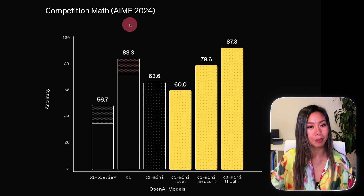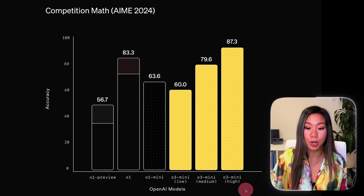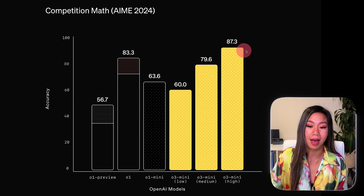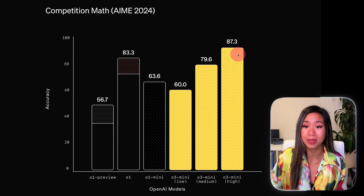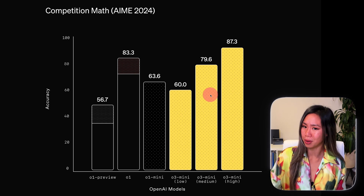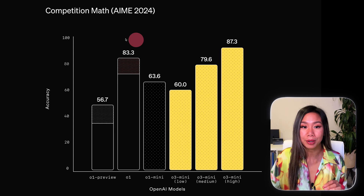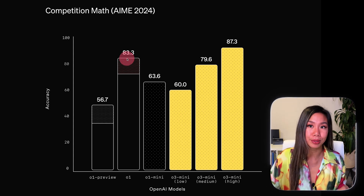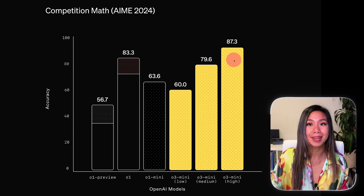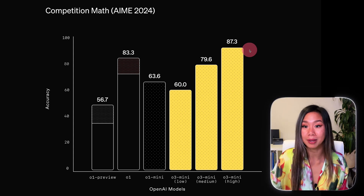Let's take a look at the first benchmark, the AIME competition math one. Here we have the three options — low, medium, and high — and you can see they have a wide range in performance. The high model does exceptionally well with a score that is nearly an A+. But then, why would I use any of the other models? The O3 mini model also does better than the full O1 model, and considering the gap between the O1 mini and O1 full, I can only imagine what the performance of the O3 full model will be.